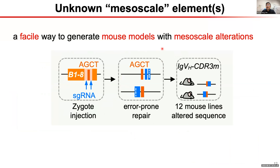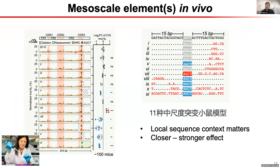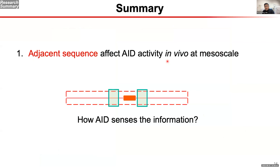We tried to narrow down the scale of this sequence context by designing a way to generate many mouse models. We collected a bunch of mouse lines, most having mutations on the CDR3 region while keeping CDR1 and CDR2 as internal controls. The take-home message is: whenever you mutate the sequence adjacent to an AGCT motif, the mutation frequency is altered just by changing the sequence environment. This experiment genetically suggests that adjacent sequences surrounding an AID hotspot can affect its activity in vivo.